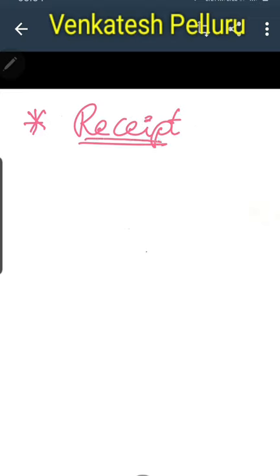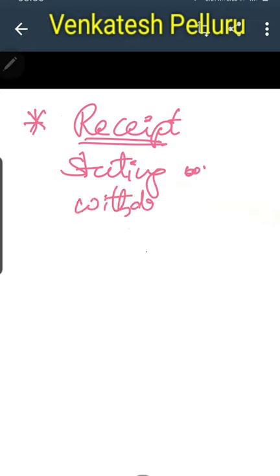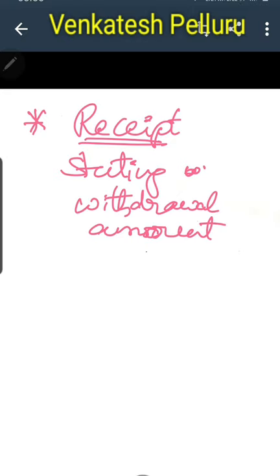The next important point is that the merchant must issue a receipt stating the withdrawal amount at the POS terminal. The receipt should clearly mention how much has been withdrawn. For example, if you purchased goods worth Rs. 1,000 and also withdrew additional cash of Rs. 1,000, the receipt should separately mention Rs. 1,000 for goods and Rs. 1,000 withdrawn as cash.